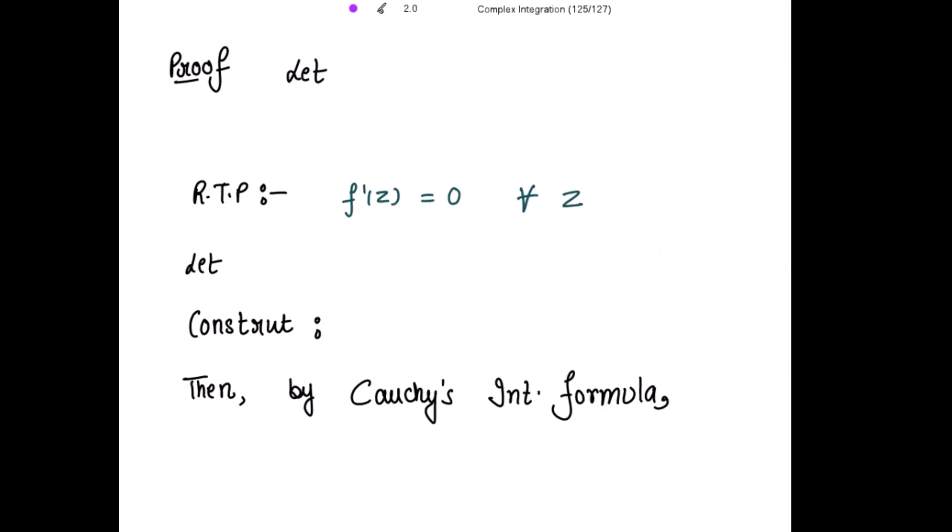Let's start with the proof. Let f(z) be an entire function. Now as it is given to us that it is a bounded entire function, so let mod of f(z) be less than or equal to M for all z. As it is a bounded entire function, so I have taken the mod.